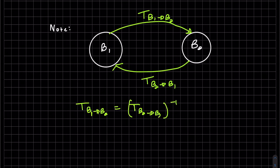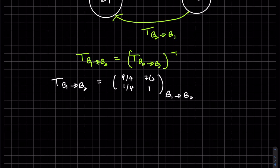So we found in the last problem, that was our transformation matrix going from B1 to B2. So now let's find the transformation matrix going from B2 to B1.